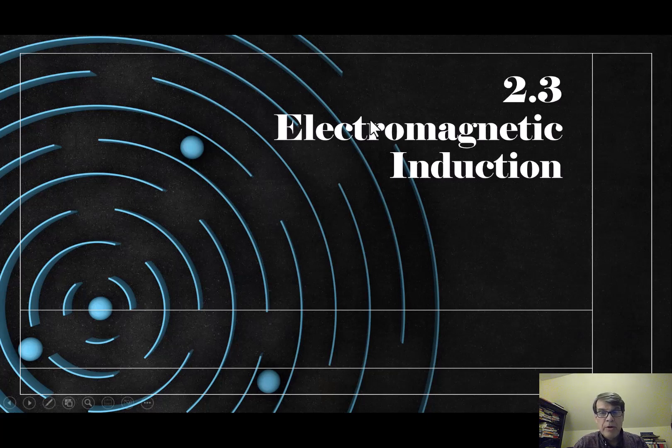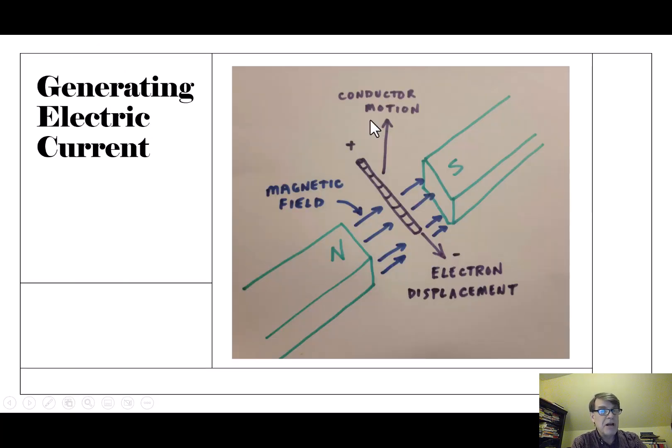So here is a hand-drawn diagram. It's not great, but I did it with my own hand. So how do we generate electric current? In this picture here, and this is taken from the Navy Basic Electricity Electronics manuals of the past from back in the 60s.